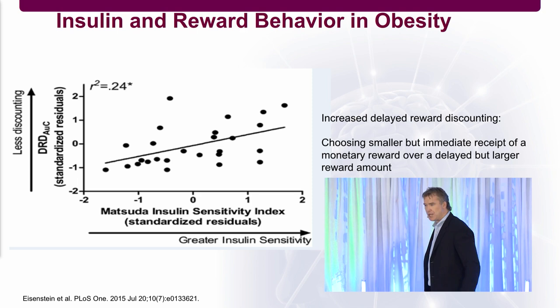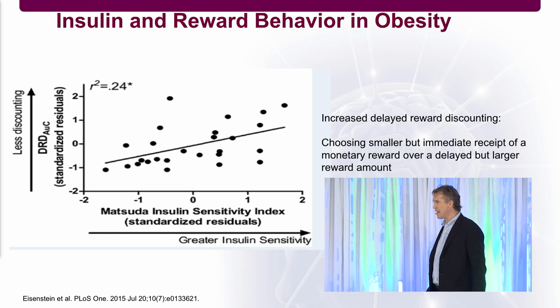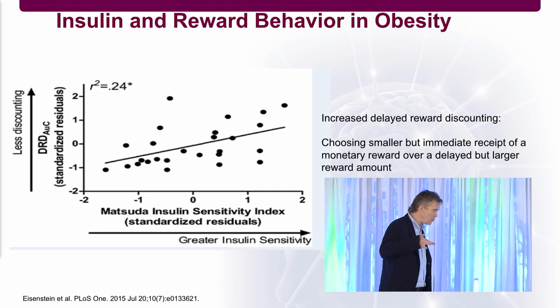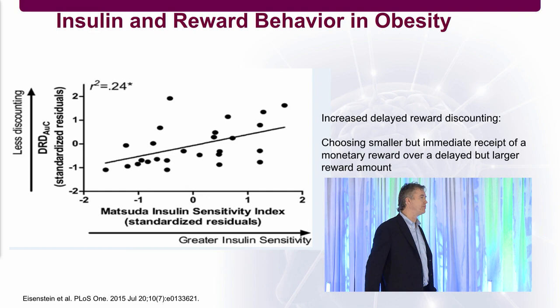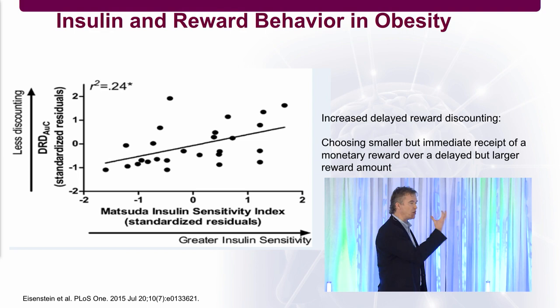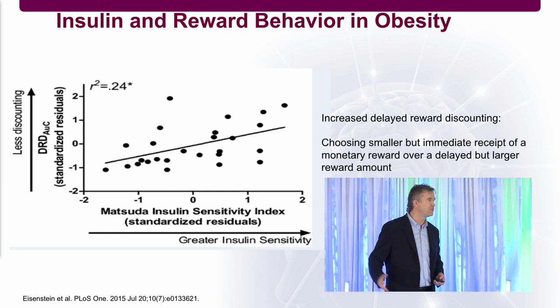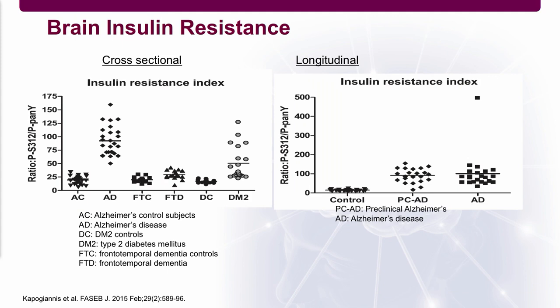It turns out that if you look at diabetics and insulin resistance, less discounting is good news, and more discounting is bad news. If you're insulin resistant, you're more likely to want the money now — that's a problem with reward function. So at the molecular level, insulin and the metabolic system affect dopamine; at the cellular and circuit levels this is already established; and at the behavioral level — reward behavior — we're beginning to see this in laboratory paradigms. It's already manifesting clinically with people exhibiting depression, anhedonia, and cognitive impairment.